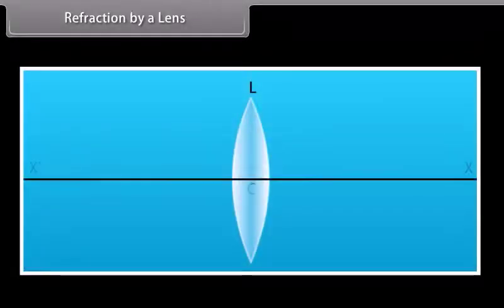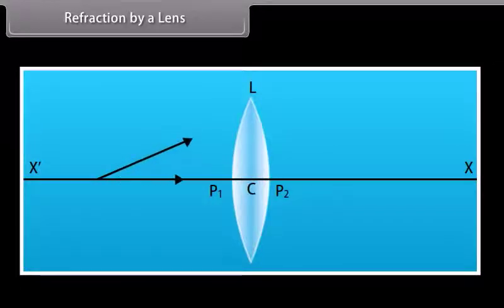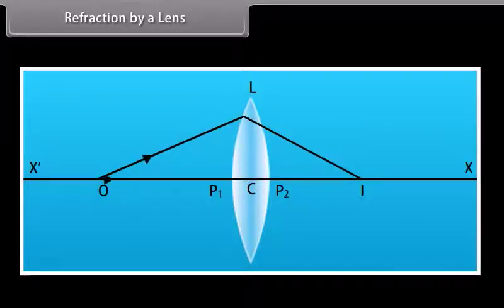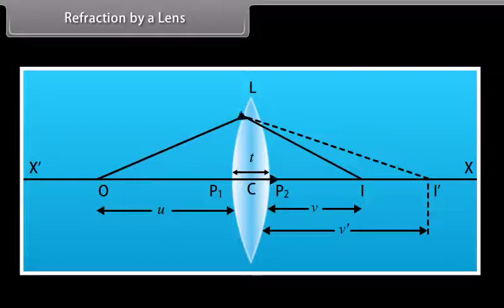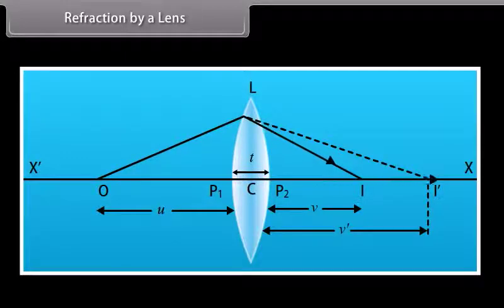Refraction by a lens. Suppose L is a thin lens. The refractive index of the material of the lens is N2, and it is placed in a medium of refractive index N1. The optical center of the lens is C, and X-X is the principal axis. The radii of curvature of the surfaces of the lens are R1 and R2, and their poles are P1 and P2. The thickness of the lens is T, which is very small.